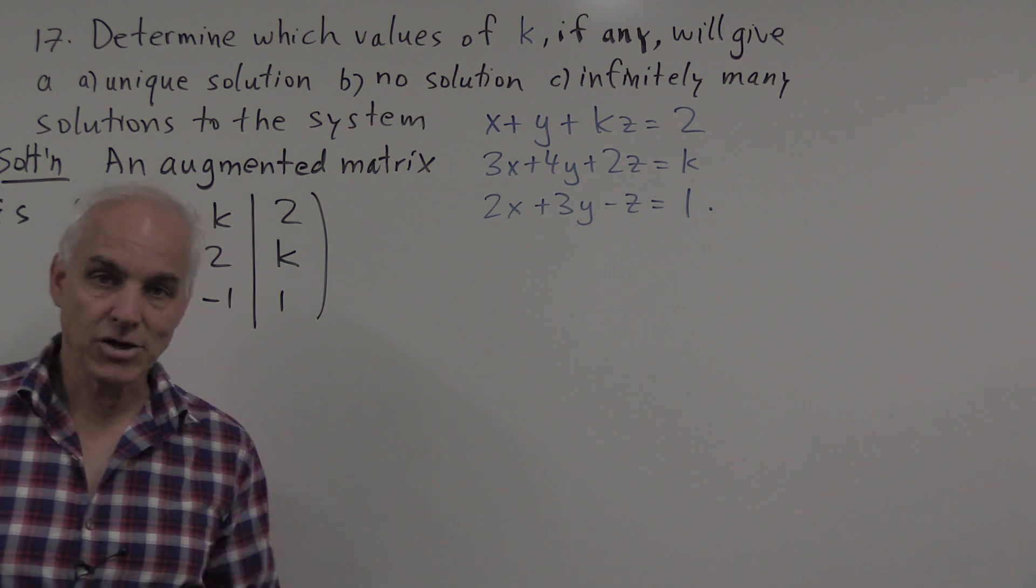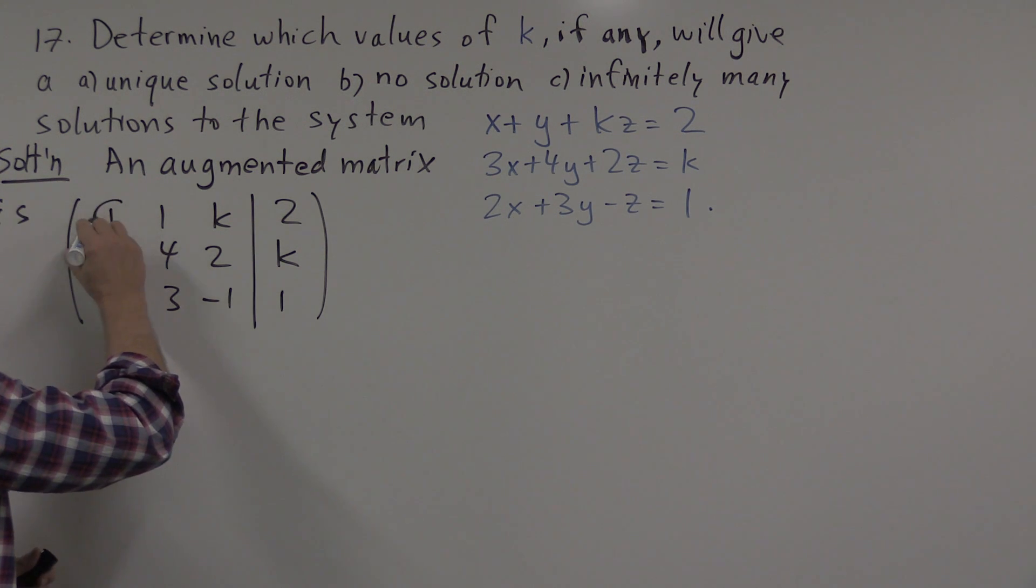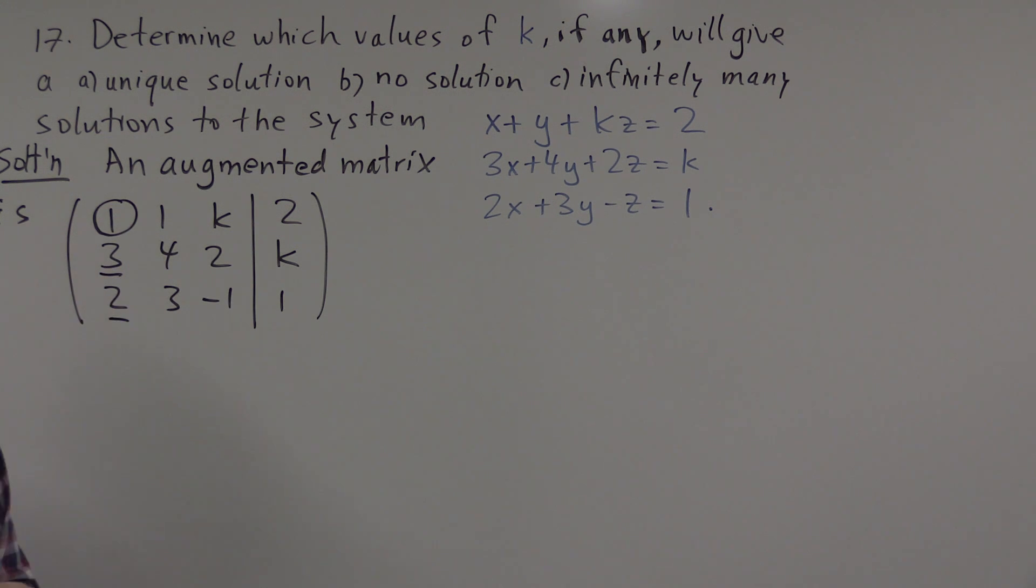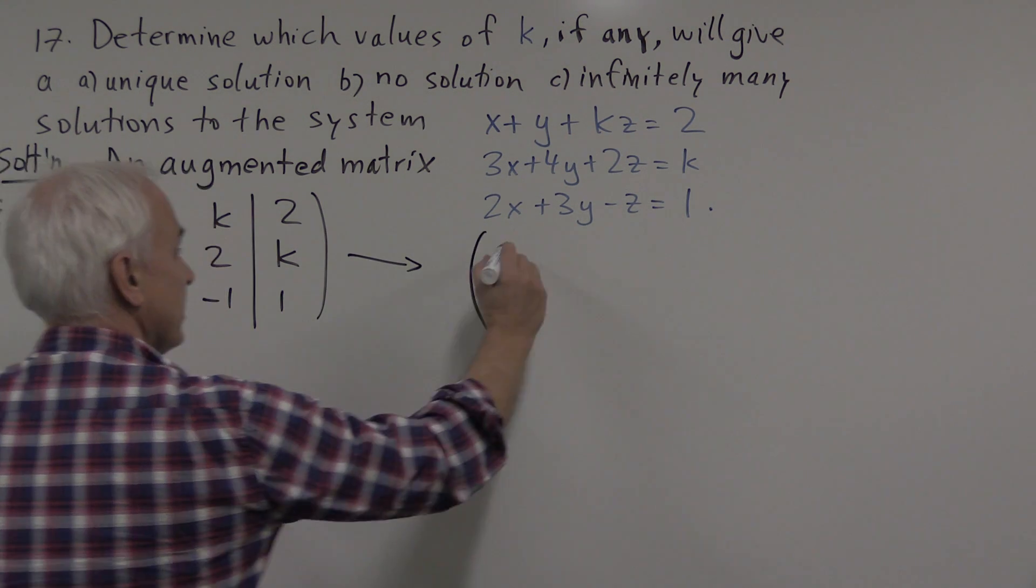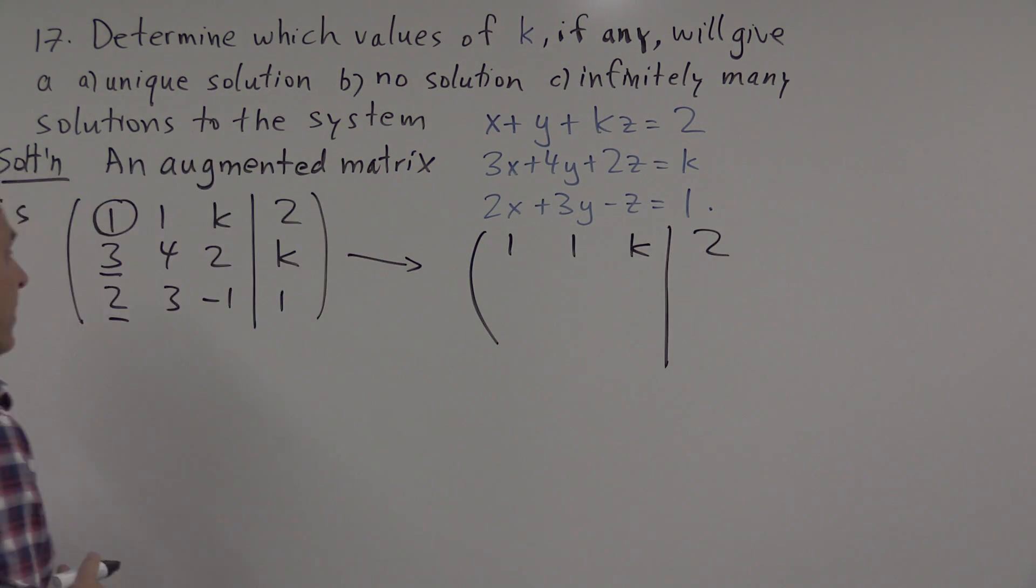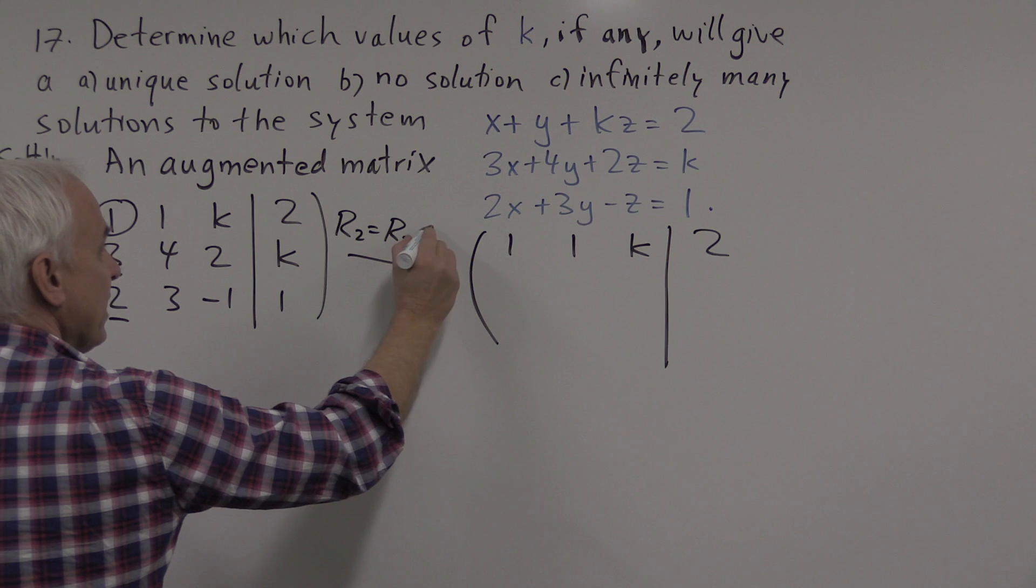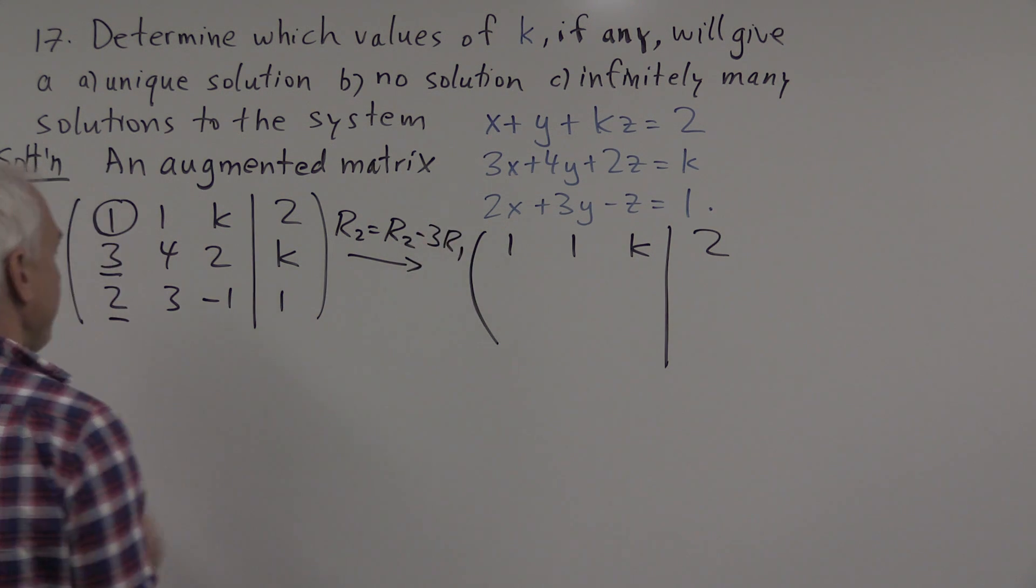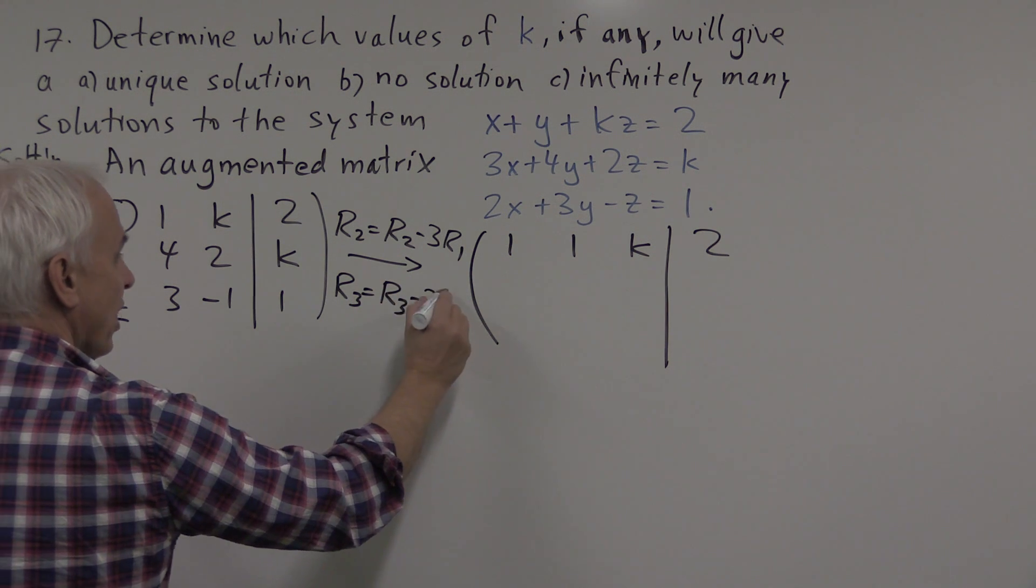Now we're going to row reduce, just as we usually do, try to ignore the fact that there's a k instead of a number. We'll start with this entry here as a pivot entry, and we're going to use it to eliminate the entries in the column below it. This will still be 1, 1, k, 2, that first row doesn't change. We're going to take row 2, and our new row 2 will be row 2 minus 3 times row 1. And our new row 3 will be the old row 3 minus 2 times row 1.